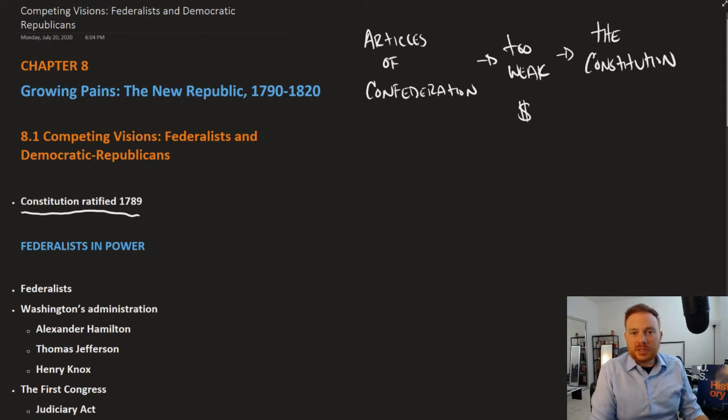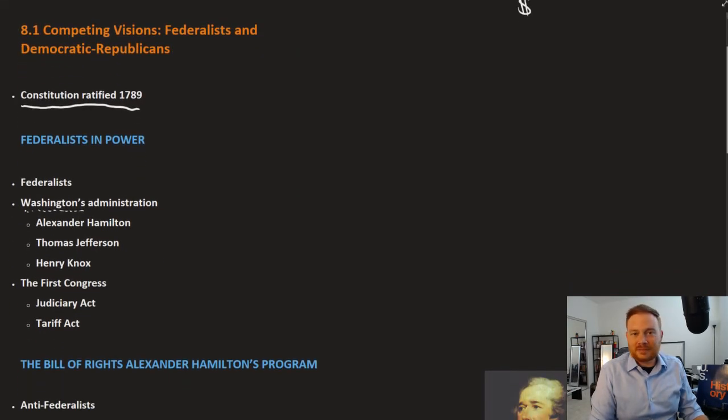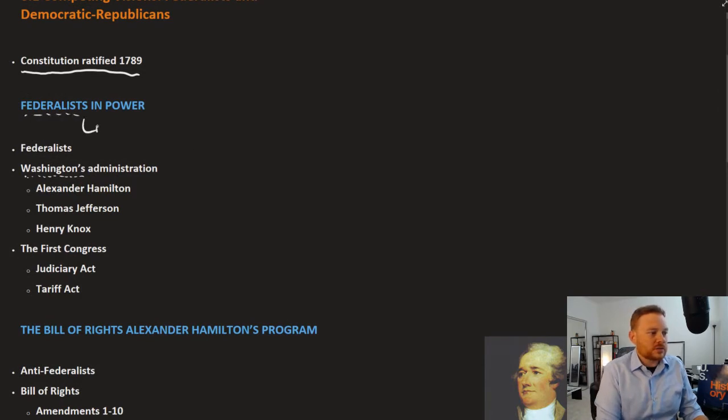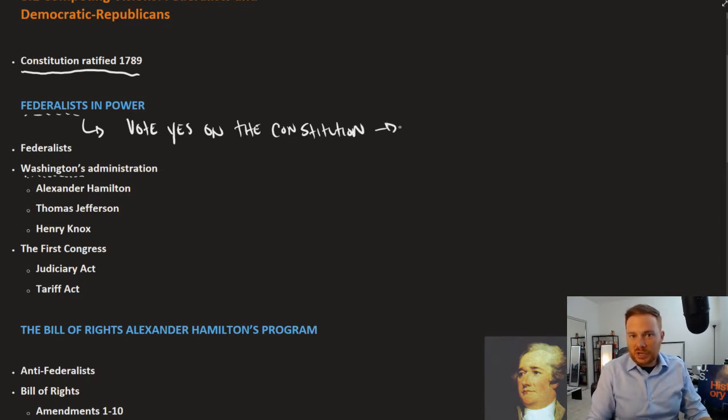However, the Articles proved to be too weak to solve the nation's problems, particularly the financial problem and outstanding war debt. That led to the Constitutional Convention where the nation's leaders met in Philadelphia and created a new governing document, the Constitution. Generally speaking, Federalists are those who want a stronger national government.